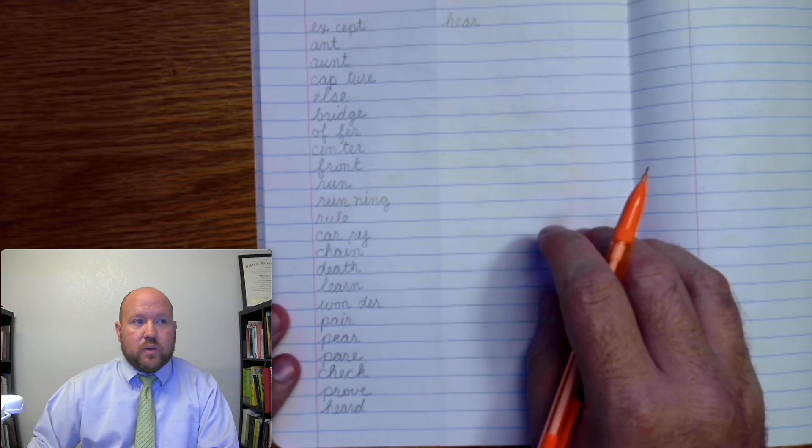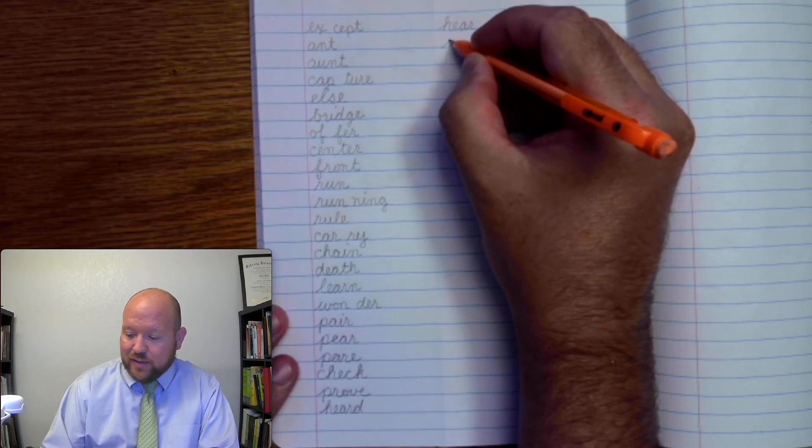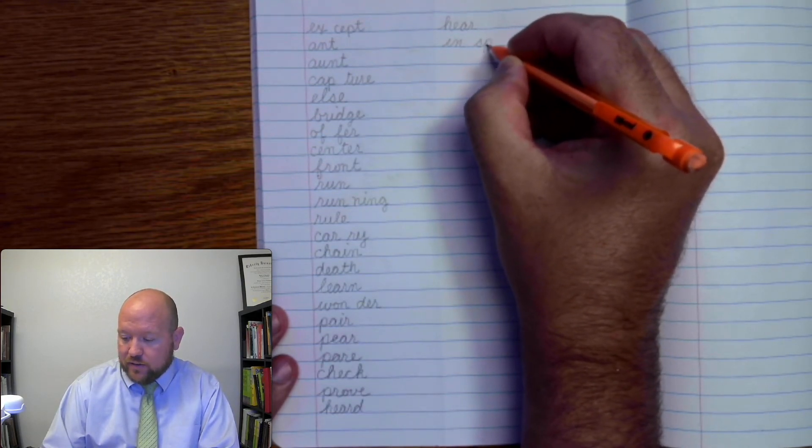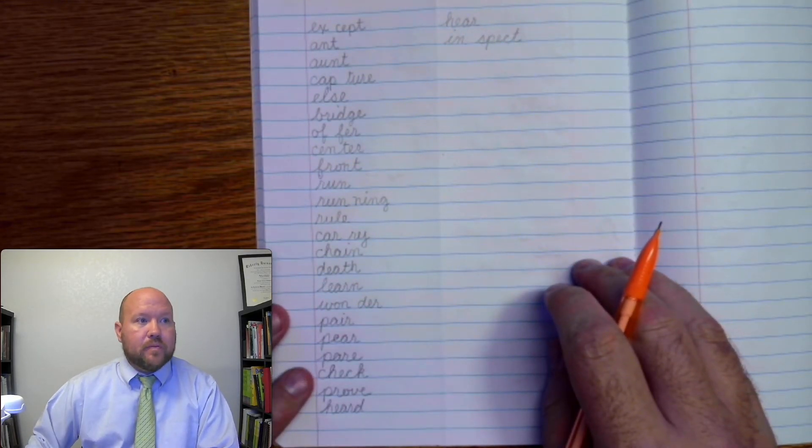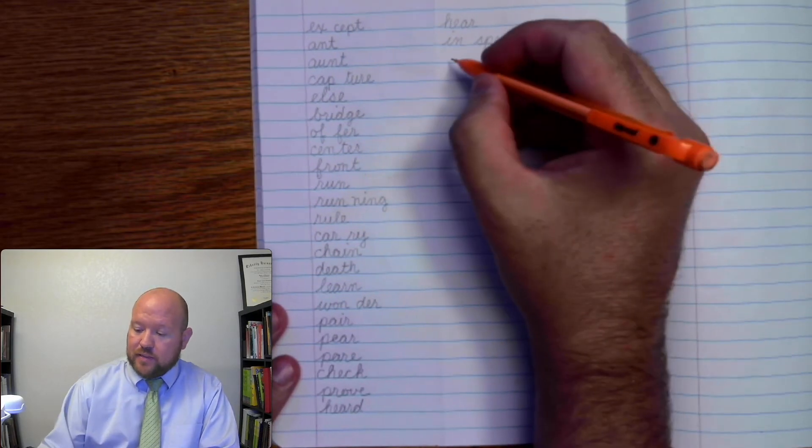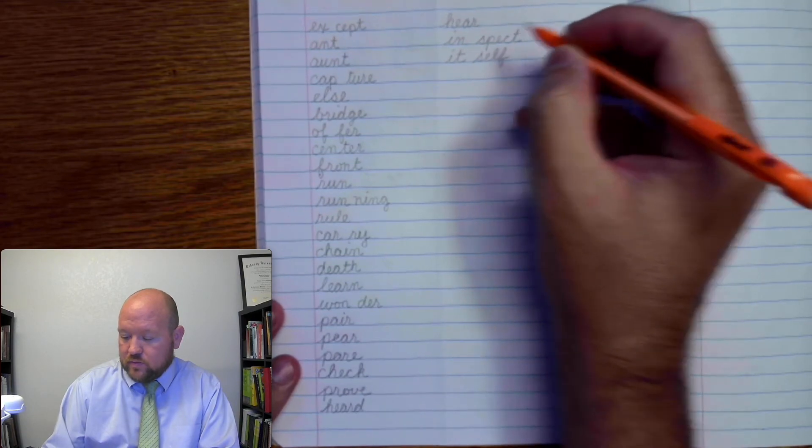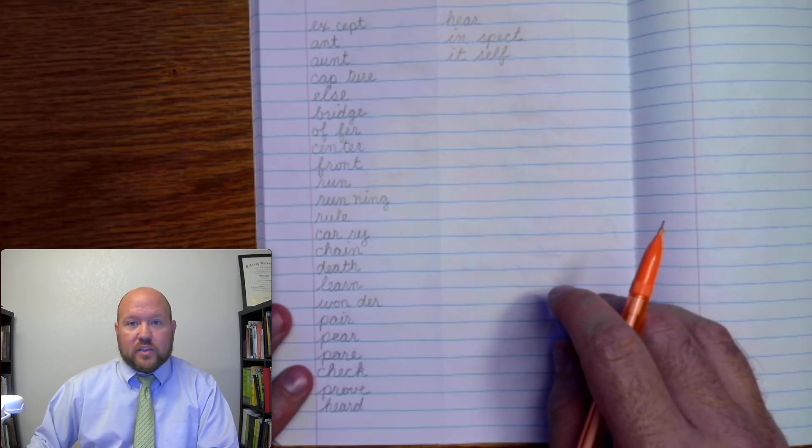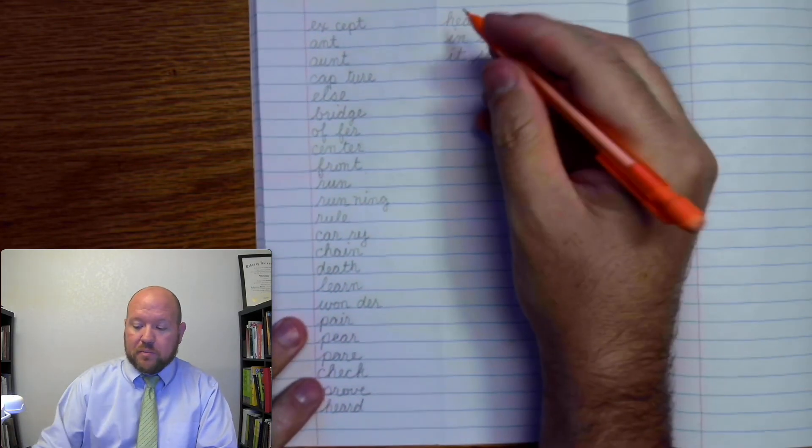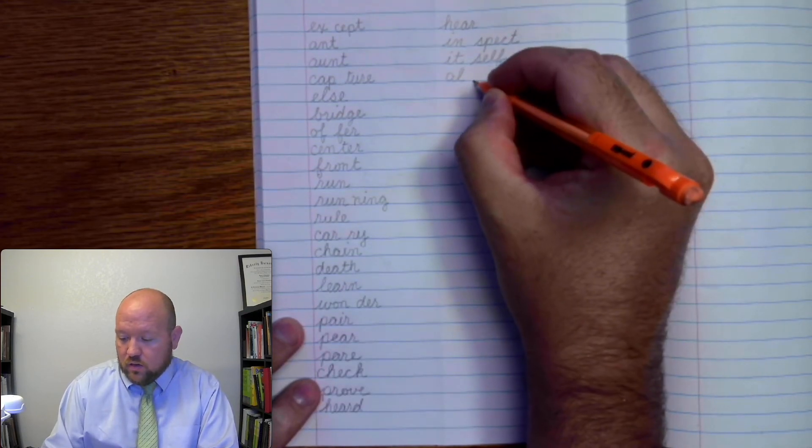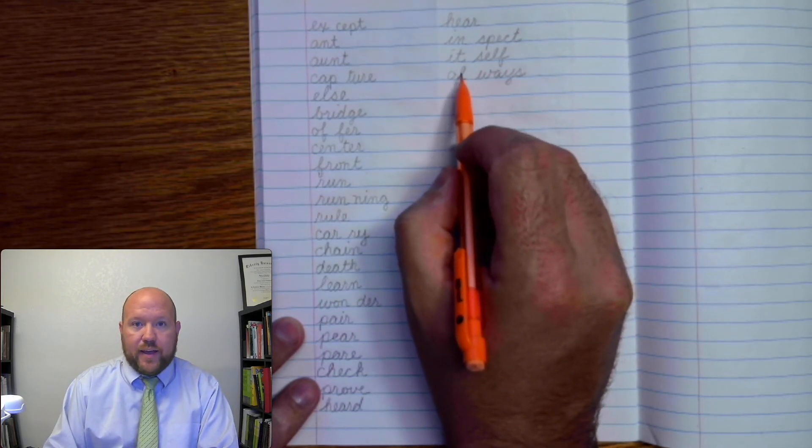The next one is inspect. Please inspect your work. Inspect. In-spect. The next one is itself. It-self. It-self. It-self. The next one is always. Always. Okay. Remember something special about always? Always. Okay. Only one L. Okay.